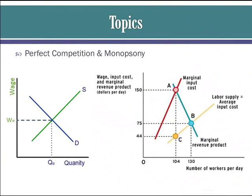In the factor market, you will learn two models: perfect competition and monopsony. A monopsony is like a monopoly, but it is a single buyer of a resource, so the wage it pays will be lower than the marginal revenue product of a resource.